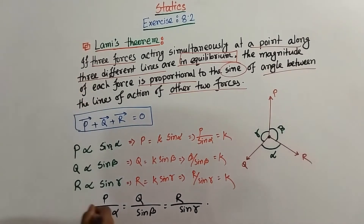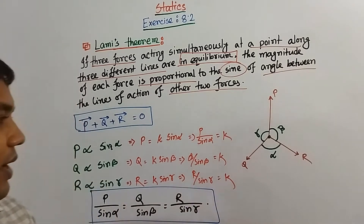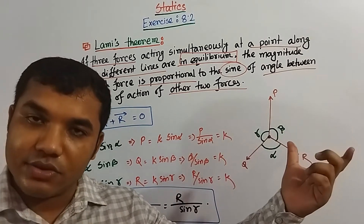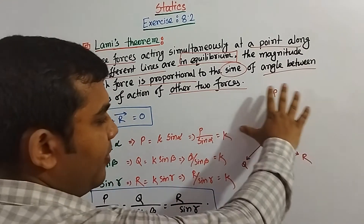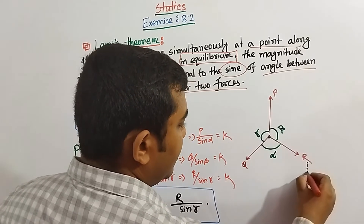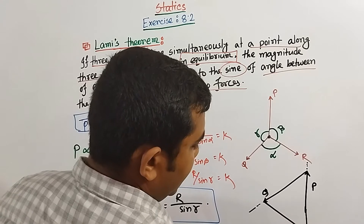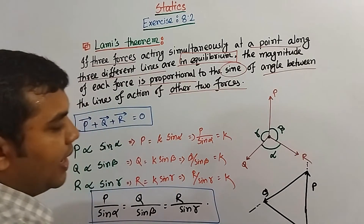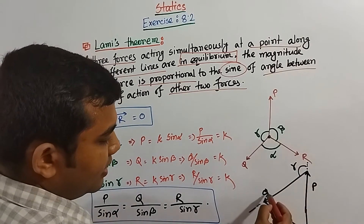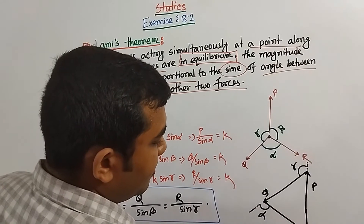Maybe a question arises in your mind — why we can write this and what's the basic relationship with the triangle's law of equilibrium. To understand that, we can draw a triangle from here. That triangle has sides P, Q, and R. Since P and Q, the angle between them was gamma — so the PQ angle should be gamma. The QR angle is alpha, and RP angle was beta.